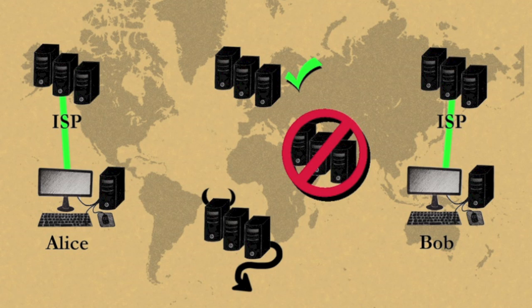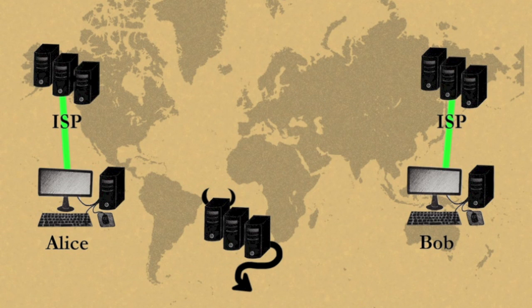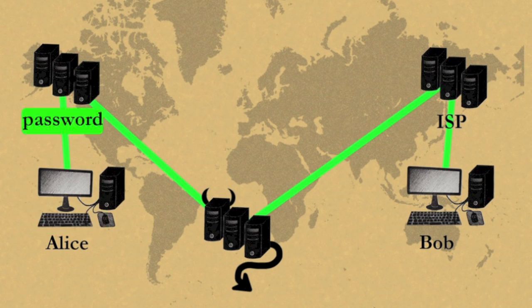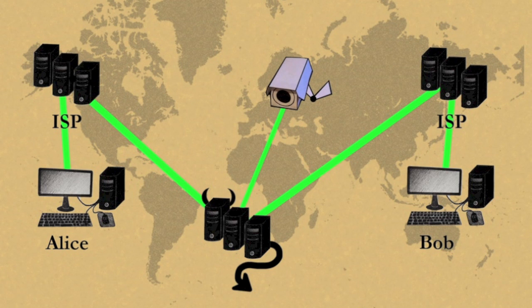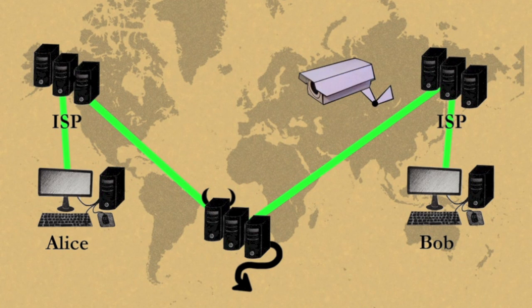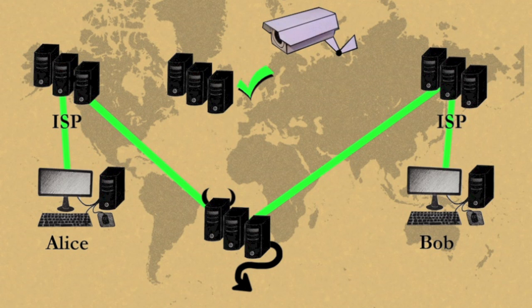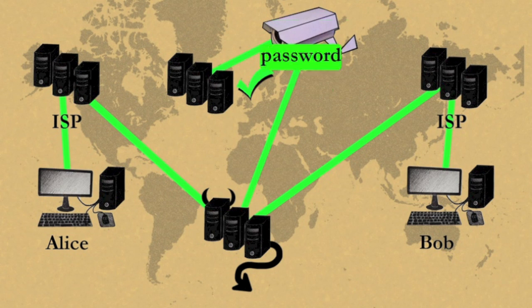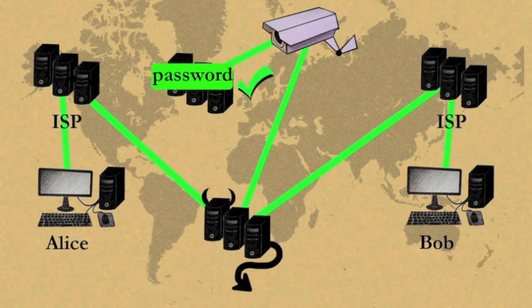In a worse case, criminals or other groups doing surveillance redirect you to a fake site. If you give this imposter site your password, it ends up in the hands of your adversaries, who take it to the site you are trying to reach, enter your password, and get access to your accounts. They can now read your messages and even see who your friends are on social networks.